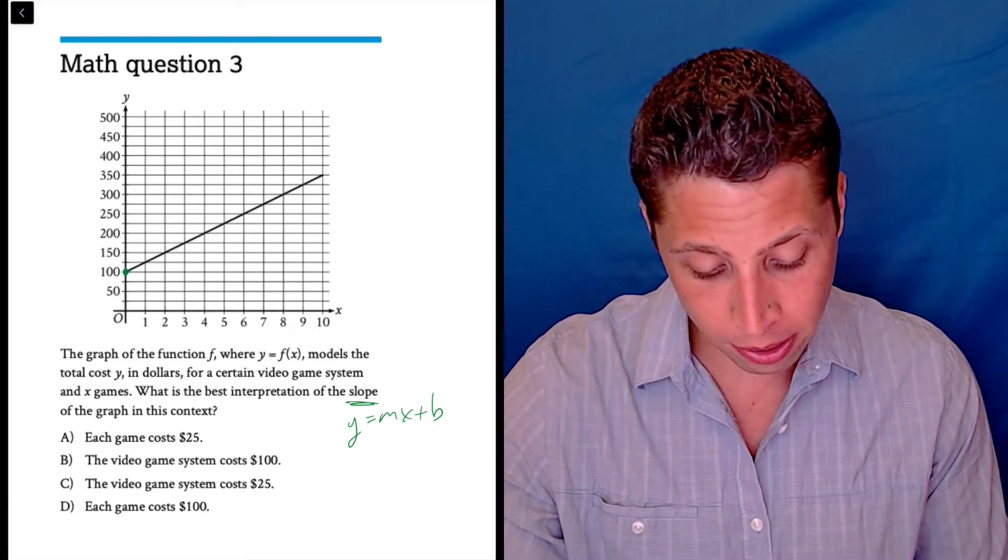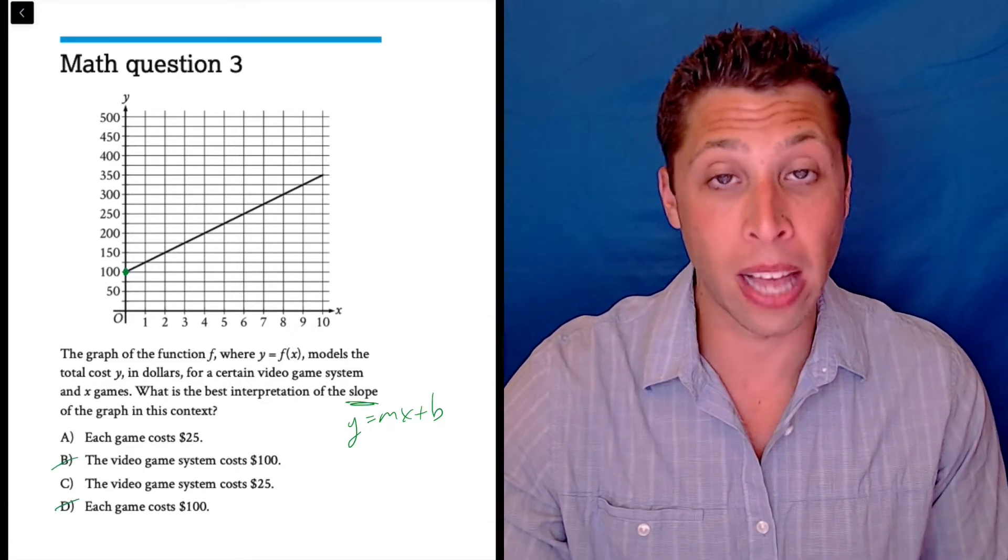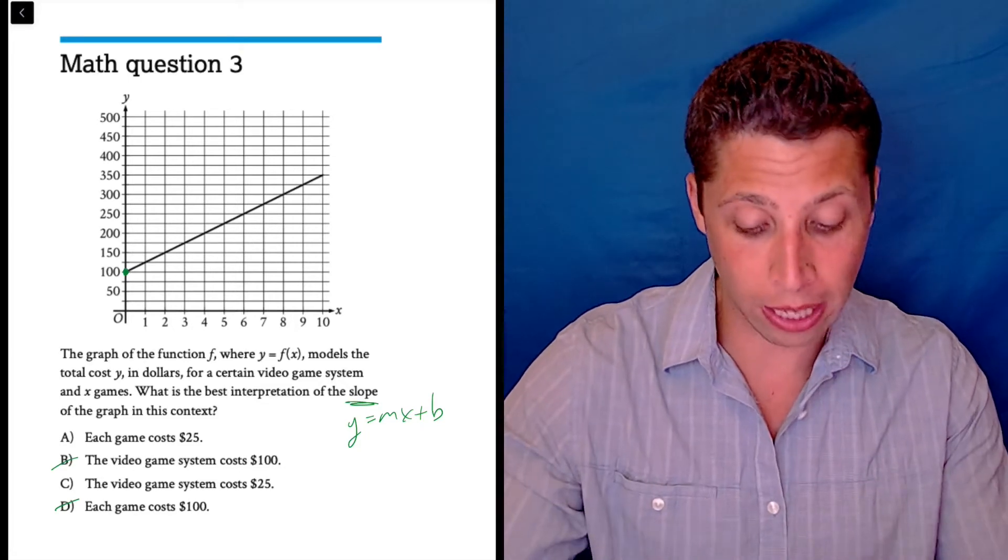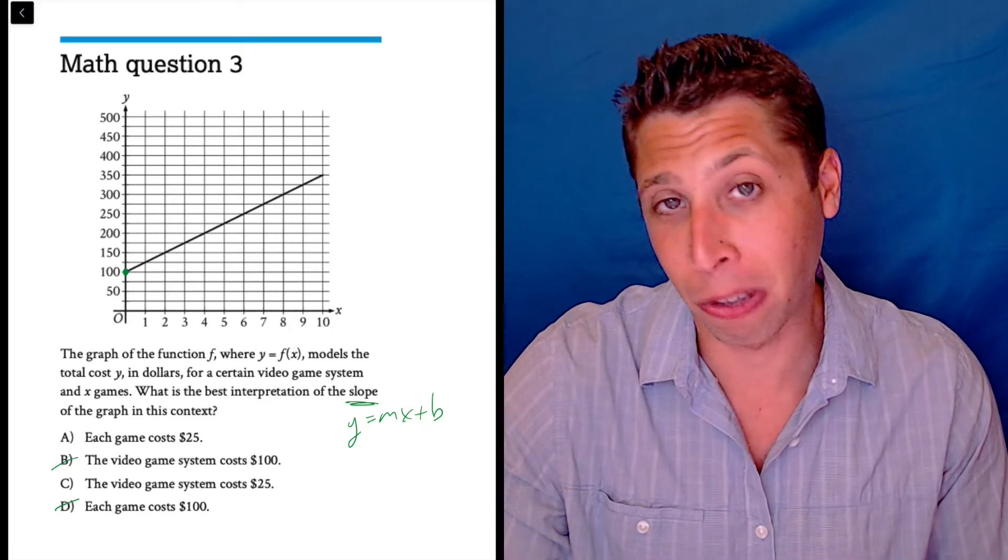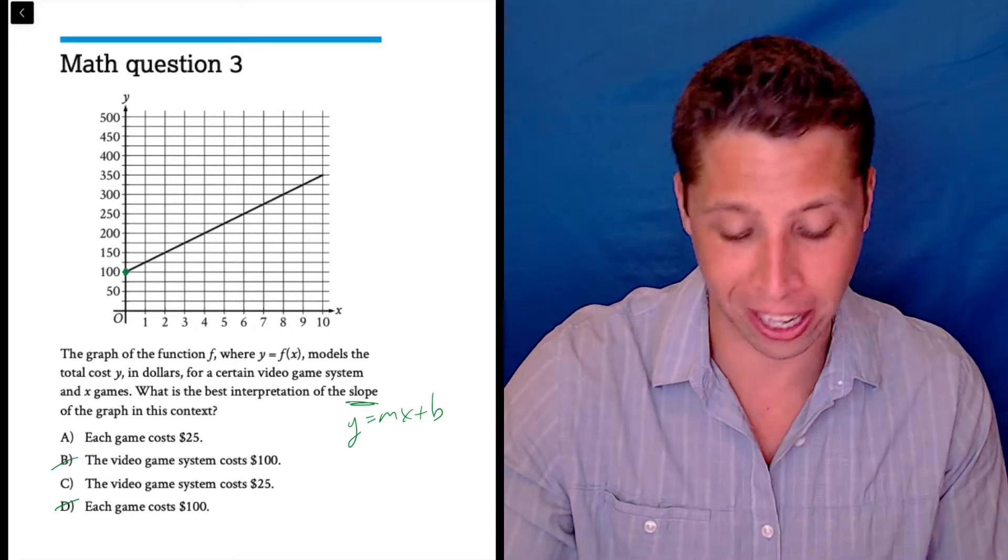That's right there, so that means it's not going to be B or D because that 100 is very clearly the y-intercept. I guess it's possible the slope could be 100 too, but obviously I'm not going to do that.